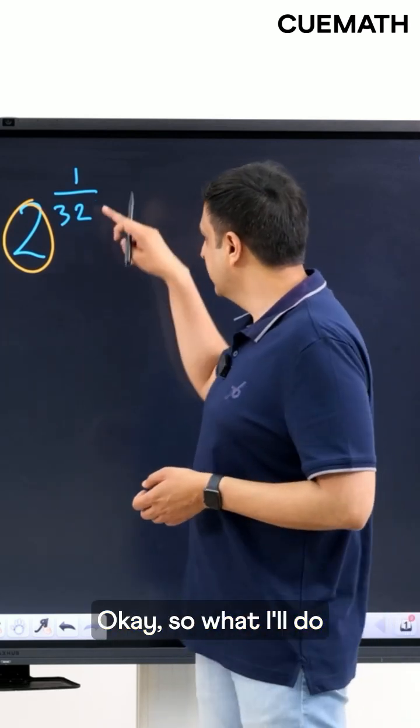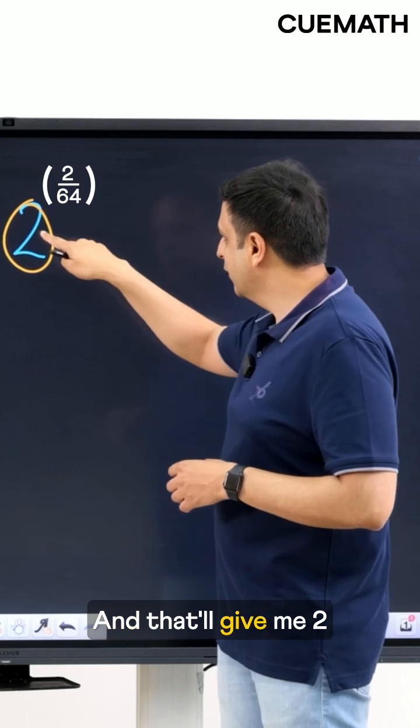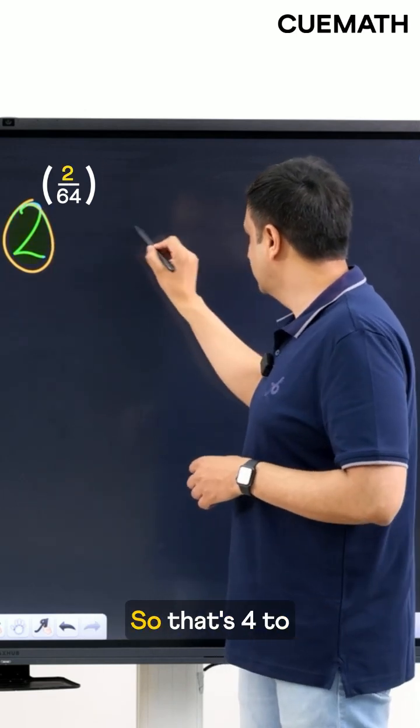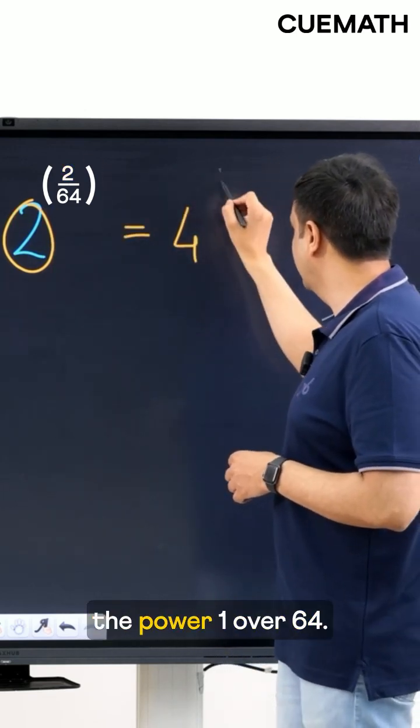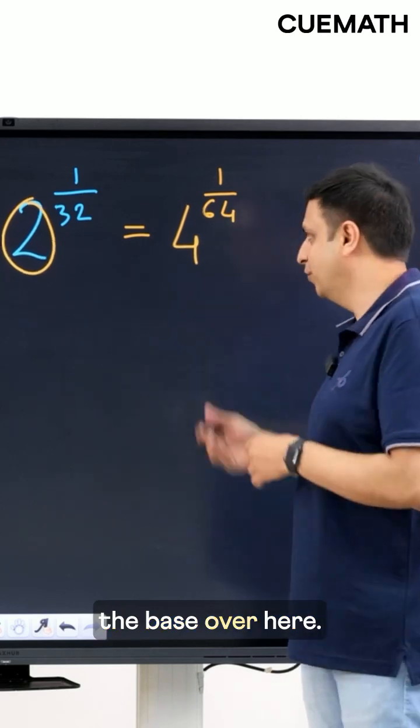Okay so what I'll do is think of this 1 over 32 as 2 over 64 and that'll give me 2 to the power 2 so that's 4 to the power 1 over 64. So you see how I have increased the base over here.